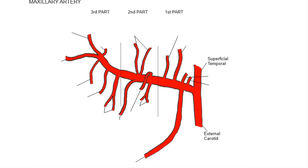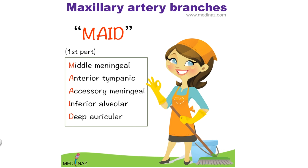First part has five branches: Middle Meningeal, Anterior Tympanic, Accessory Meningeal, Inferior Alveolar, and Deep Auricular. The mnemonic for the first part is MAAID — M for Middle Meningeal, A for Anterior Tympanic and Accessory Meningeal, I for Inferior Alveolar, and D for Deep Auricular.